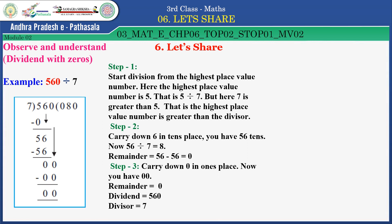Now look at Step 2. Here, you have to carry down 6 in the tens place. Then you have 56 tens. Now, 56 divided by 7 — how much do you get? 8. Then remainder: 56 minus 56, how much? 0. Now look at the third step. Here, you have to carry down 0 in the ones place. Now we have 0. The remainder will be 0.